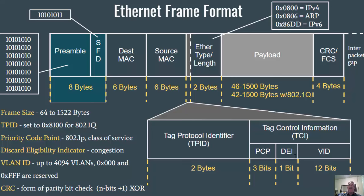Additional fields inserted with the 802.1Q tag include: the Priority Code Point (PCP), which is 802.1P and signifies class of service or quality of service for priority handling; the Discard Eligibility Indicator (DEI), a 1-bit field that can be set to indicate congestion upstream; and the VLAN ID, which is 12 bits long, allowing up to 4,094 VLANs. Values 0x000 and 0xFFF are reserved.